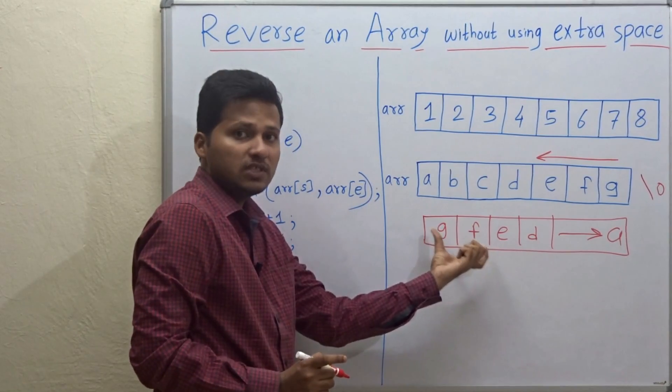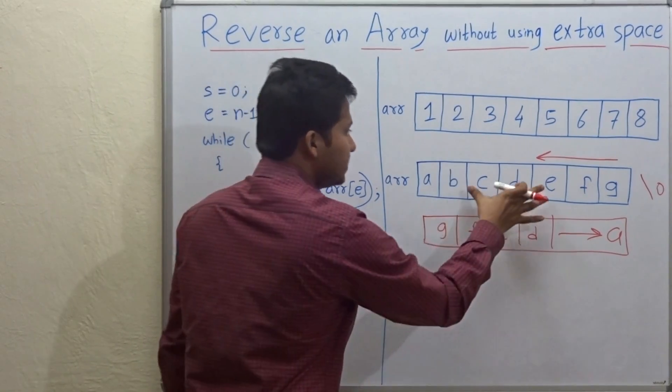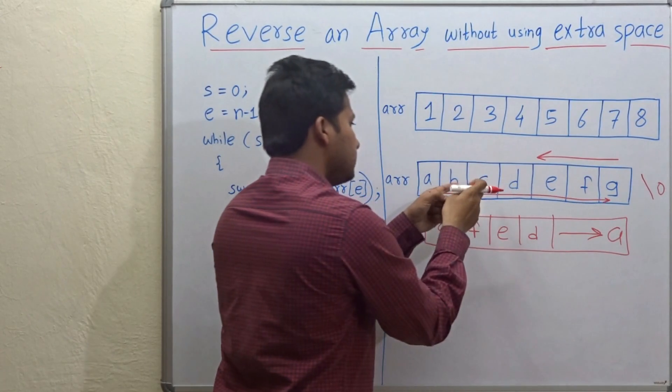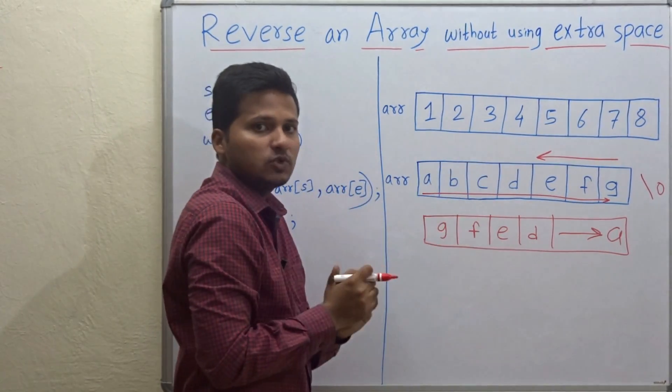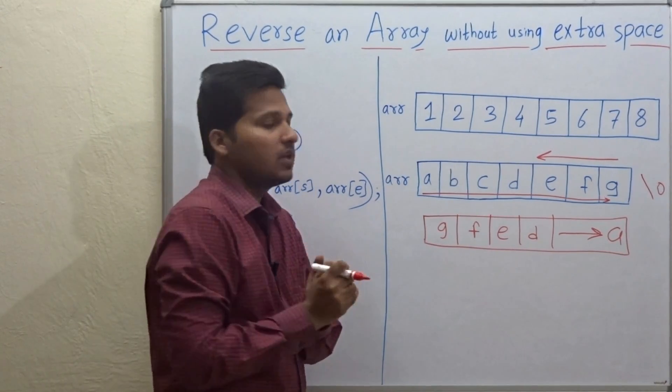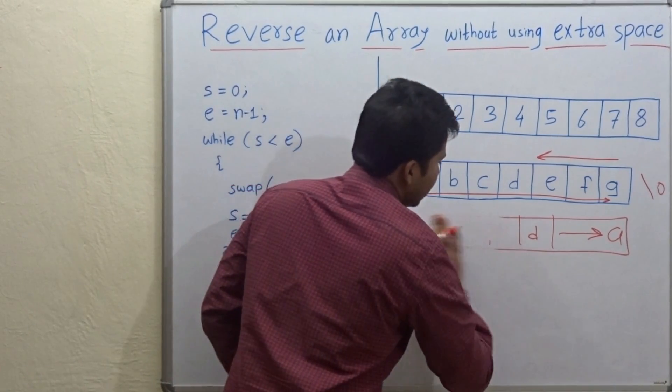But here we are using the extra space. So we are going to see now how to reverse this array using this same array. So we are going to use the same array to reverse itself. So now I will explain you the method.